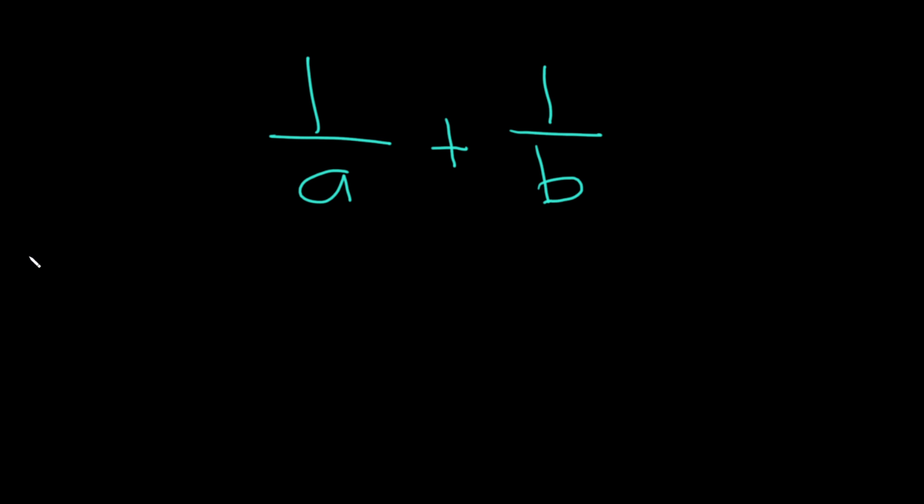So to do this solution, we're going to find a common denominator. And one way to do that is to just multiply the a and the b. So our common denominator is going to be ab.